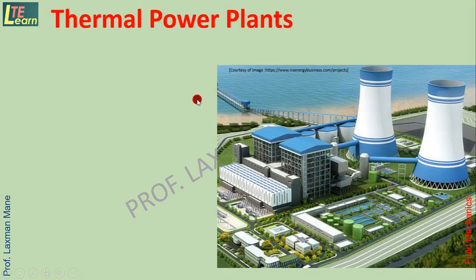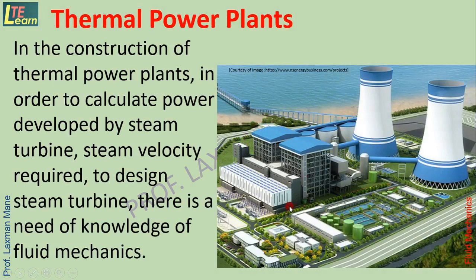Similarly, in thermal power plants, in order to calculate the power developed by the steam turbine — the main component of electricity generation — steam turbine is run by steam generated from the boiler. This steam at high pressure is conveyed from the boiler to the steam turbine through pipes, during which some pressure drop occurs. Fluid mechanics principles are used to determine the required steam velocity at the entry of the turbine. In the design of steam turbines — finding the size of the rotor and number of blades — knowledge of fluid mechanics is required.